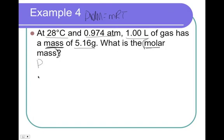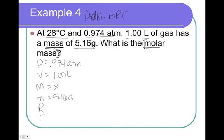So, set it up: P, V, M, m, R, T. Pressure was 0.974. Volume is 1 liter. Molar mass is X. Mass is 5.16 grams. R is 0.0821. And temperature, 28 degrees Celsius, is 301 Kelvin.